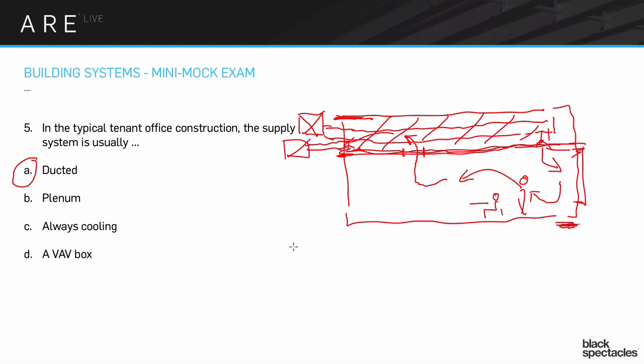But that's the gist of that system. Of those sort of office tenant scenarios, it's probably 80% of it is just like this. So very, very common. If this thing had said the return system here, I would have said the answer was B, plenum. But because it's talking about the supply system, it would be ducted.